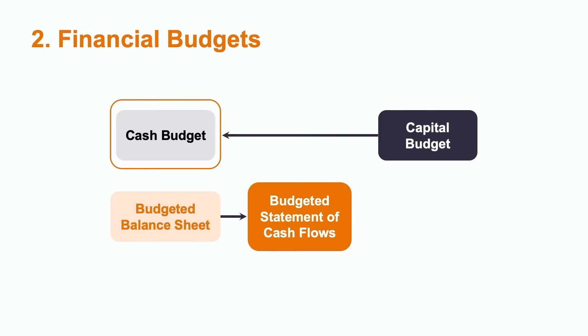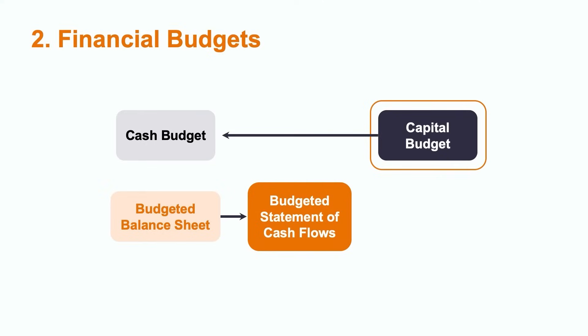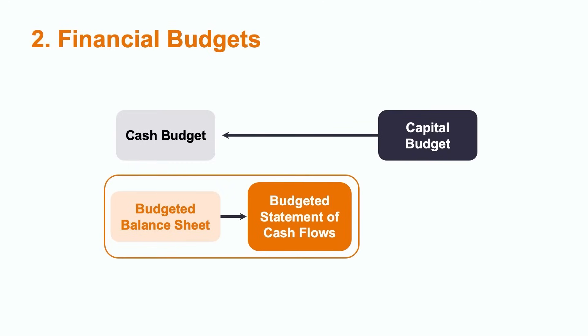This would include a cash budget that tracks all expected inflows and outflows of cash for the year, as well as a capital budget which details the expected capital investment in new assets for the organization. This allows companies to produce a budgeted balance sheet and budgeted statement of cash flows.